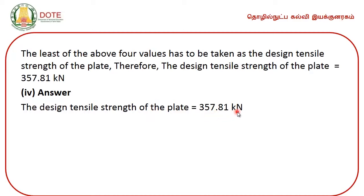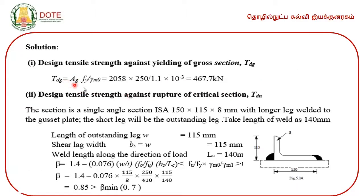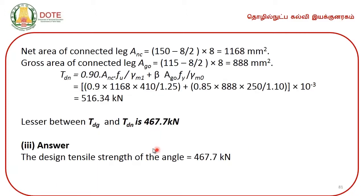The governing design tensile strength is 357.81 kilo Newton. A similar type of problem on an unequal angle section of size 150 by 115 by 8 mm, connected by means of a gusset plate on its longer leg by fillet welds, is also worked out here. Design tensile strength against gross area yielding is 467.7 kilo Newton, and against rupture of critical section it is found to be 516.34 kilo Newton. The least value is 467.7 kilo Newton for the given exercise.